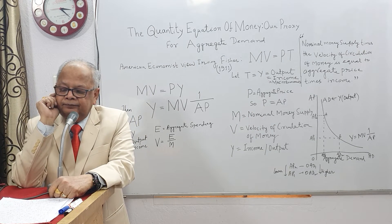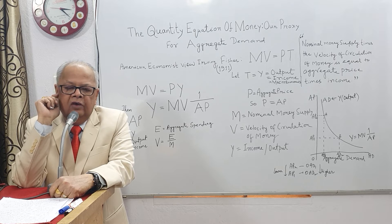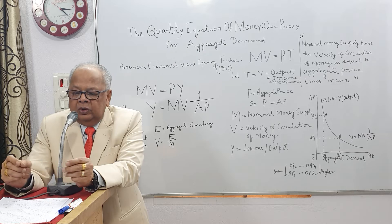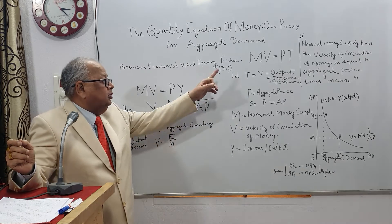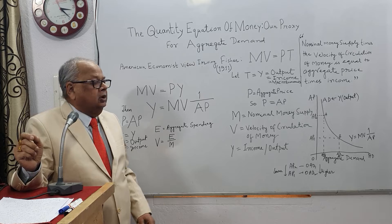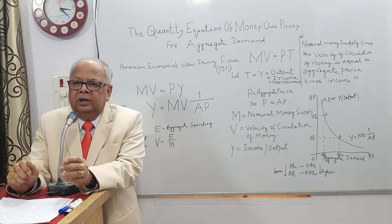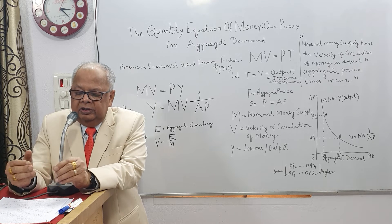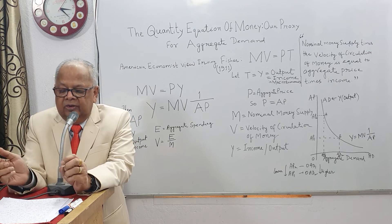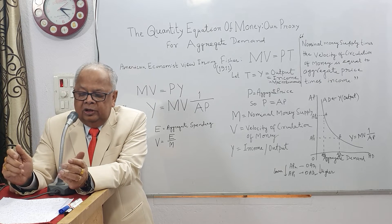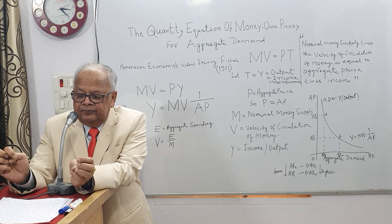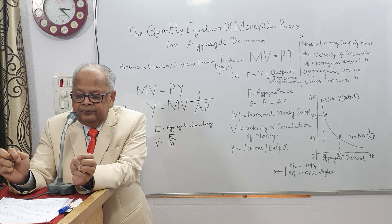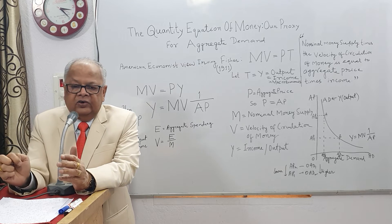The original equation of Irving Fisher — the quantity equation of money — is MV = PT, where M is nominal money supply, V is velocity of circulation of money, P means aggregate price, and Y stands for income.